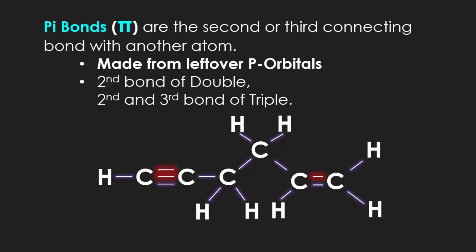Pi bonds, however, are going to be the second or third connecting bond with another atom that carbon makes. These will be made from leftover p orbitals, which is incredibly specific. Pi starts with P, so do p orbitals. You have to remember that. That means that they're going to be the second bond of a double bond. Remember, the first bond of a double bond is sigma. And they will make up the second and third bond of a triple bond. The first bond in a triple is sigma. We're noticing them here, and there's only three of them, while all the purple lines represent sigma.